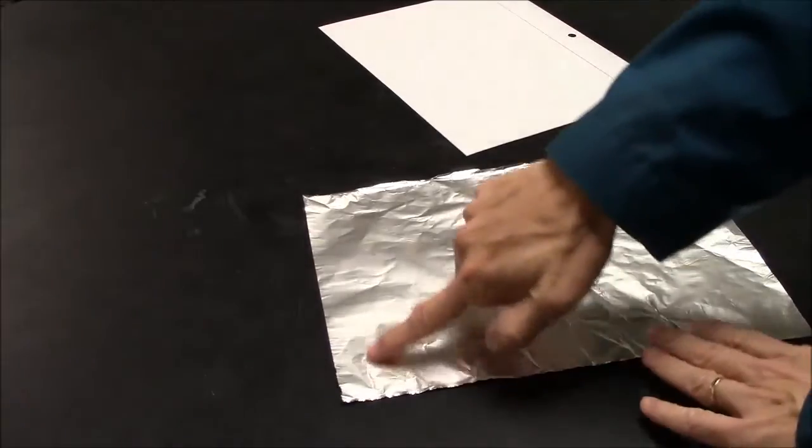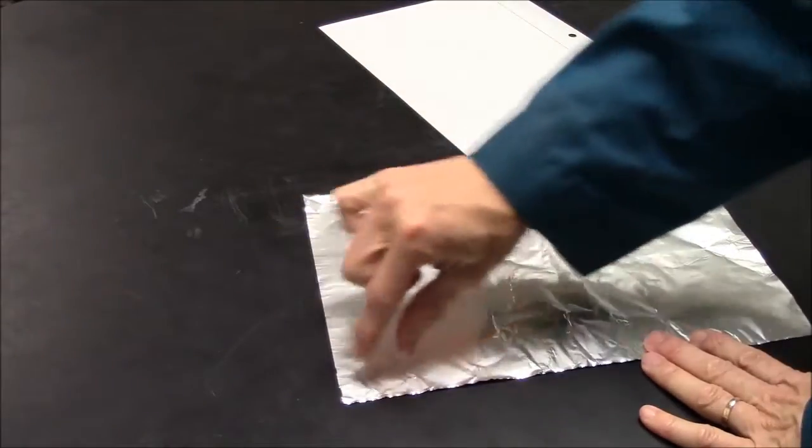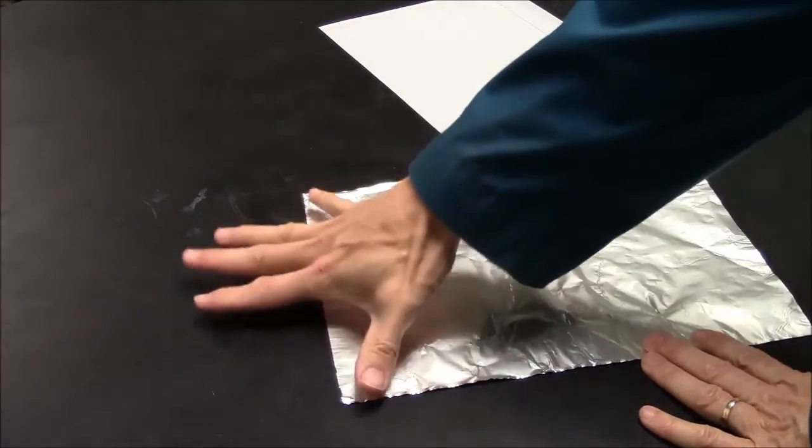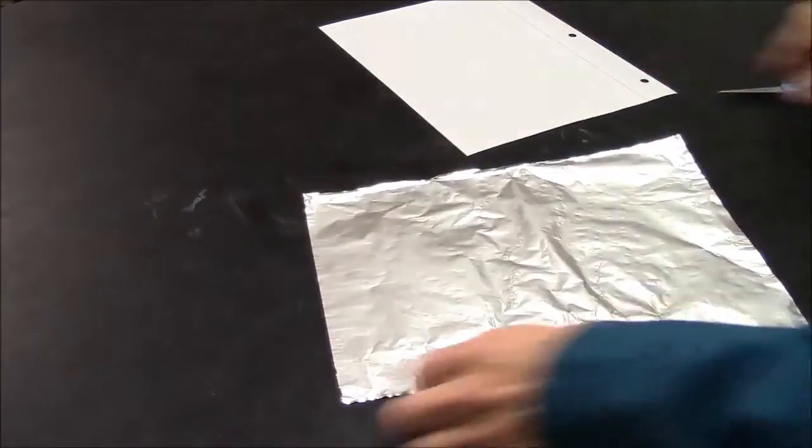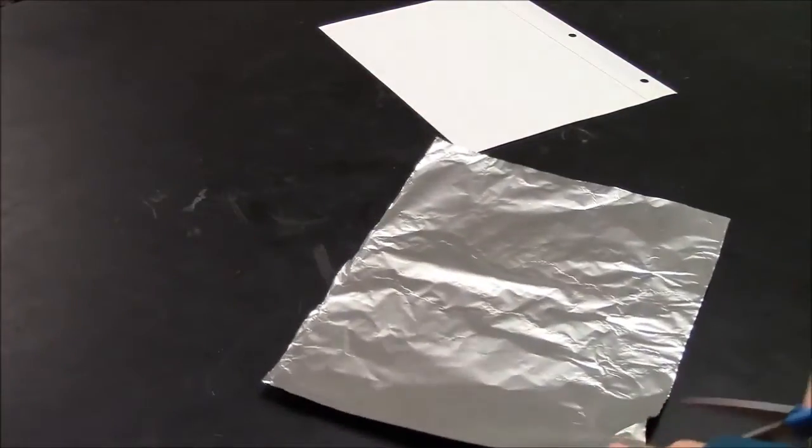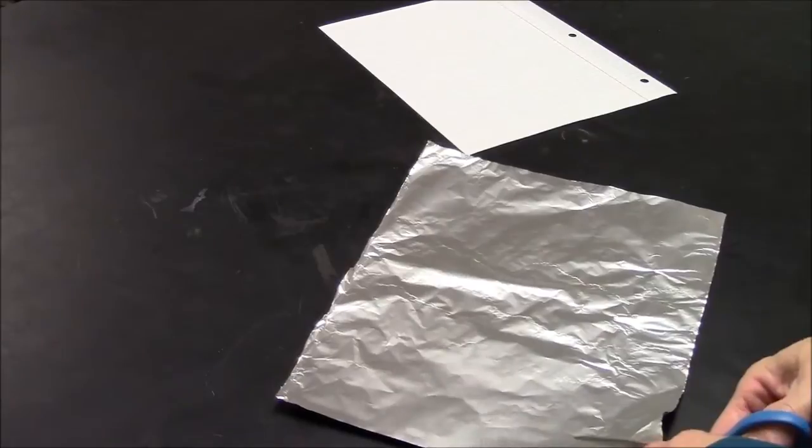To start making a fuse, you need some aluminum foil that's about 8 inches in this direction. So my hand span is just about 8 inches. That's 20 centimeters.